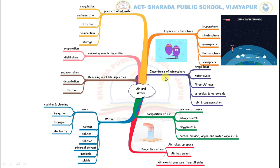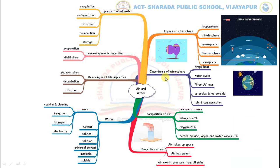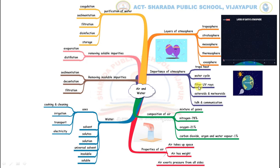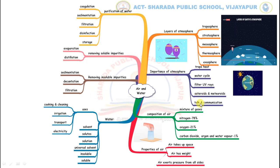The second branch deals with the importance of atmosphere. The atmosphere traps heat from the sun during the day and lets it out slowly at night. The water cycle takes place in the atmosphere. The ozone layer filters out the harmful ultraviolet rays of the sun. The atmosphere also protects the earth from asteroids and meteoroids. We are able to talk and communicate because of the atmosphere, as sound can travel only through a substance — in this case, air.